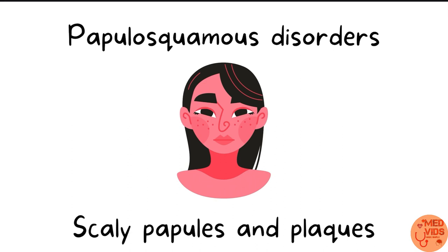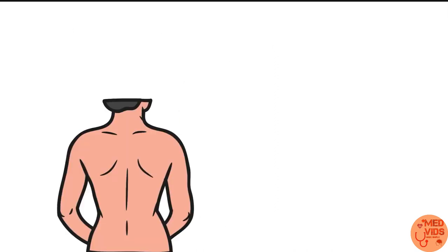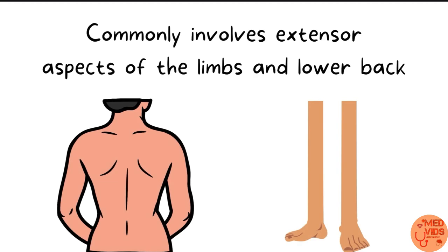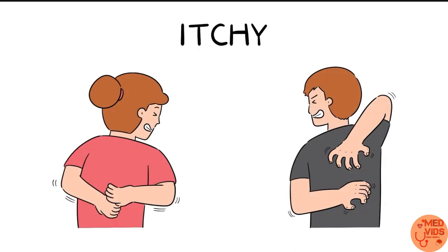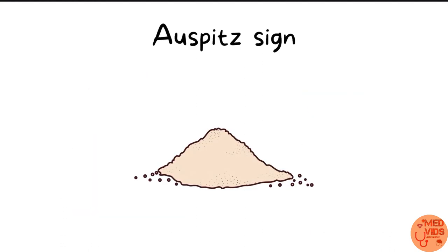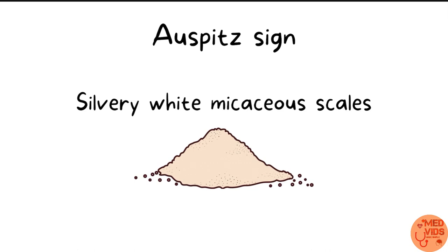Psoriasis belongs to a group of disorders known as papulosquamous disorders, where there will be papules and plaques along with formation of scales. Papules are flat lesions less than one centimeter in size, and plaques are flat lesions more than one centimeter in size. These scaly plaques are usually seen on the extensor aspect of limbs — the back side of your arms and front side of your legs — and also on the lower back. These lesions are often itchy and can cause a lot of distress.